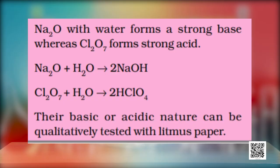Let us reinforce this by showing that Na2O is a basic oxide and Cl2O7 is an acidic oxide. We can explain this by showing reactions with water. Sodium oxide forms sodium hydroxide, a strong alkali, and Cl2O7 forms perchloric acid. We can confirm basic and acidic nature using a litmus test. Sodium oxide will change the colour of red litmus paper to blue, indicating its basic nature, and perchloric acid will change the colour of blue litmus paper to red, indicating its acidic nature.